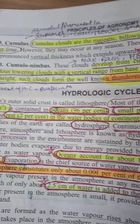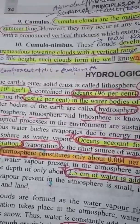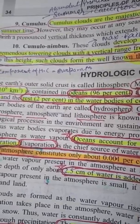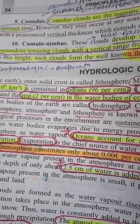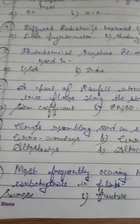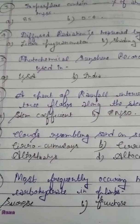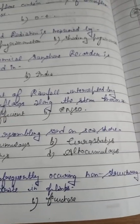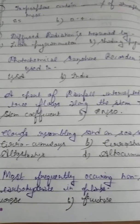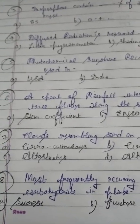Question number 7: Cloud resembling sand on a seashore. Cloud classification is very important. Remember: study of clouds is called nephology, lines joining equal cloud cover are called isonephs, and cloud cover is measured in the unit called octa. The 1956 International Cloud Atlas of the World Meteorological Organization classified clouds into 10 categories. Cirrus is the highest cloud. Cirrocumulus resembles sand on a seashore — it is very commonly asked.